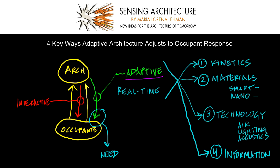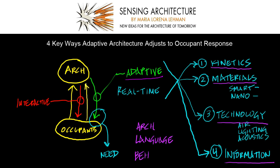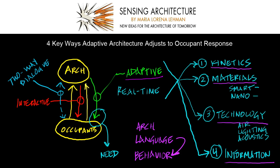All of these different ways in which adaptive architecture can adjust to occupant response come together to yield the architectural language, which becomes the architecture's real-time behavior. What happens is that this adaptive architecture and occupant begin to have a two-way dialogue that occurs in real time as each senses the other and adjusts to improve because of the other. So the relationship becomes synergistic.